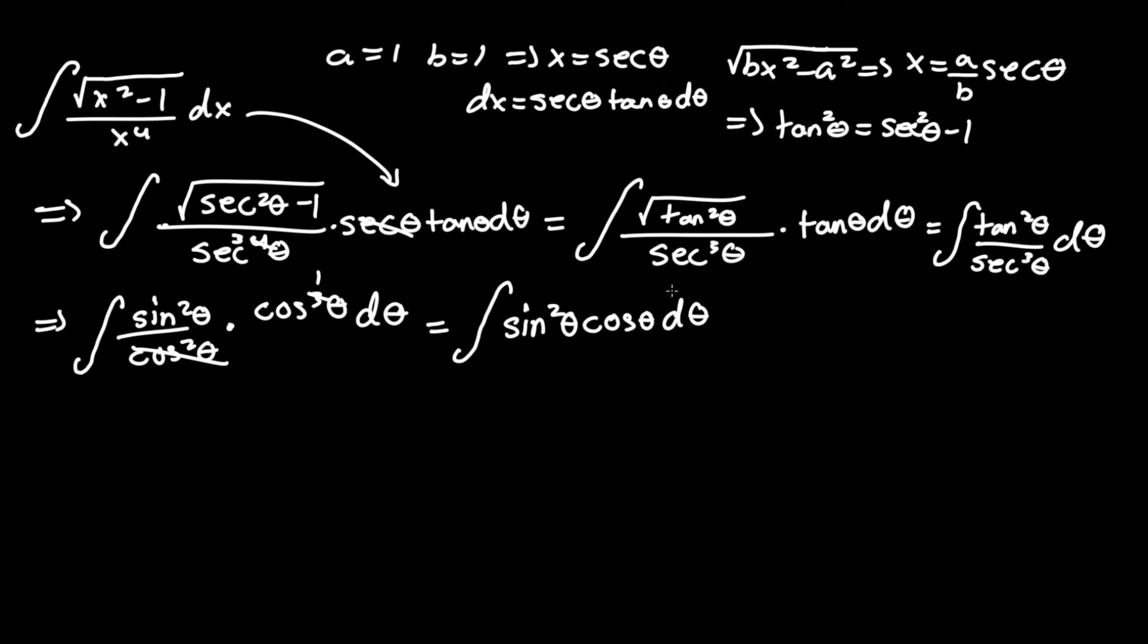Now, it seems that we're going to have to do a little bit of u sub. And since the higher term is sine in this case, and that it's to an even power, we can set u equal to sine theta, where du equals cosine theta d theta.